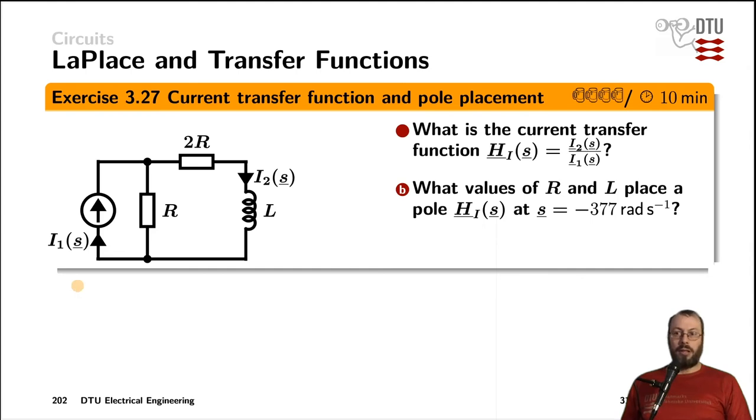Now we are dealing with the current source and the current transfer function with that circuit here with two resistors and an inductor. And then we need to dimension the component values to place the pole at a specific frequency.